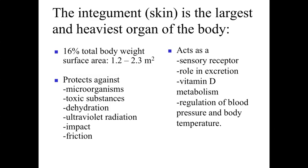We also need protection against impact and friction. If we bump into things, fall, or brush up against things, we don't want to essentially leave body parts behind. So there's a wide range of protective functions associated with the skin. The skin also serves as an interface between our body and the external world, with specialized structures involved in sensory reception to determine what we're touching and what the temperature outside is.